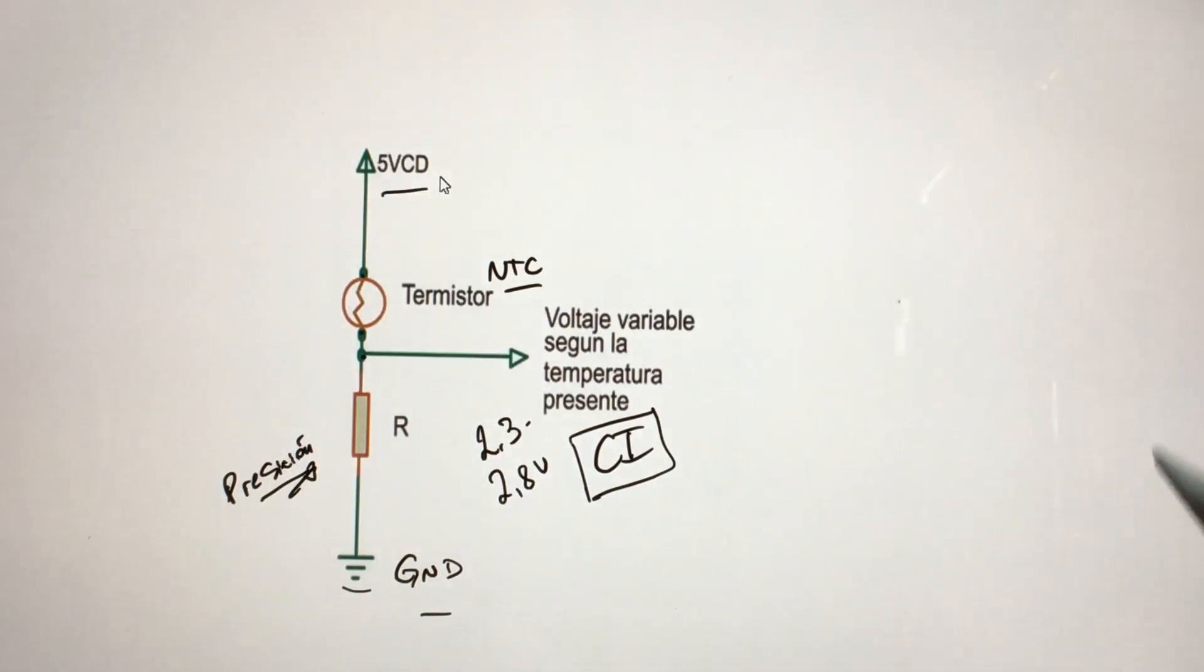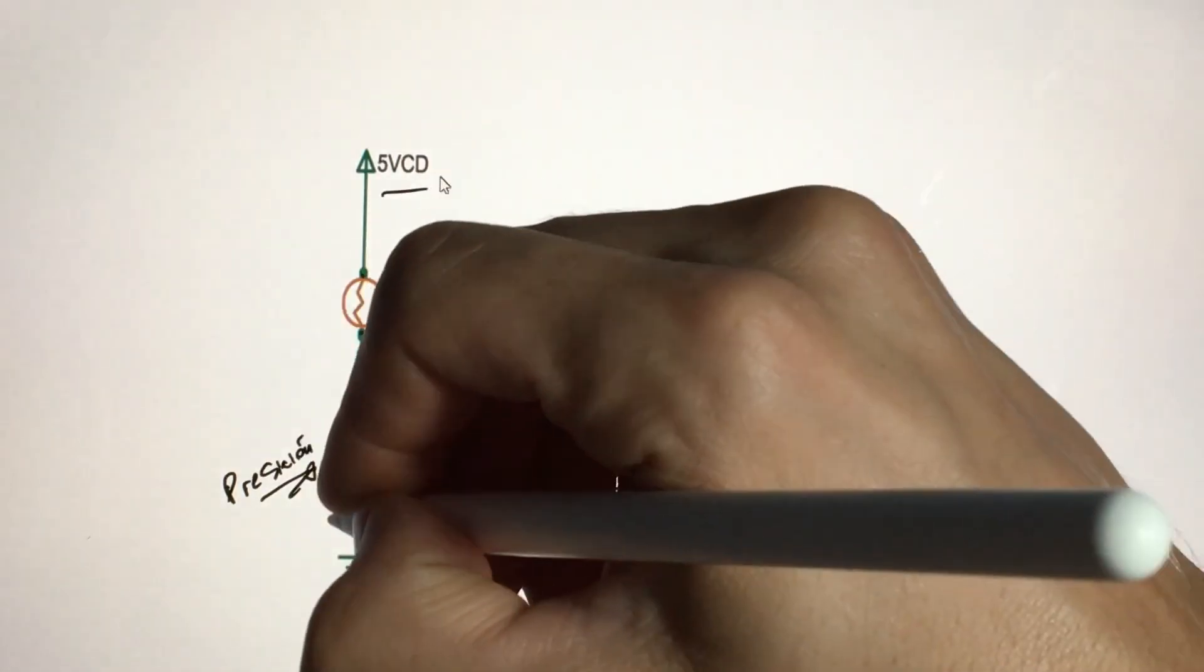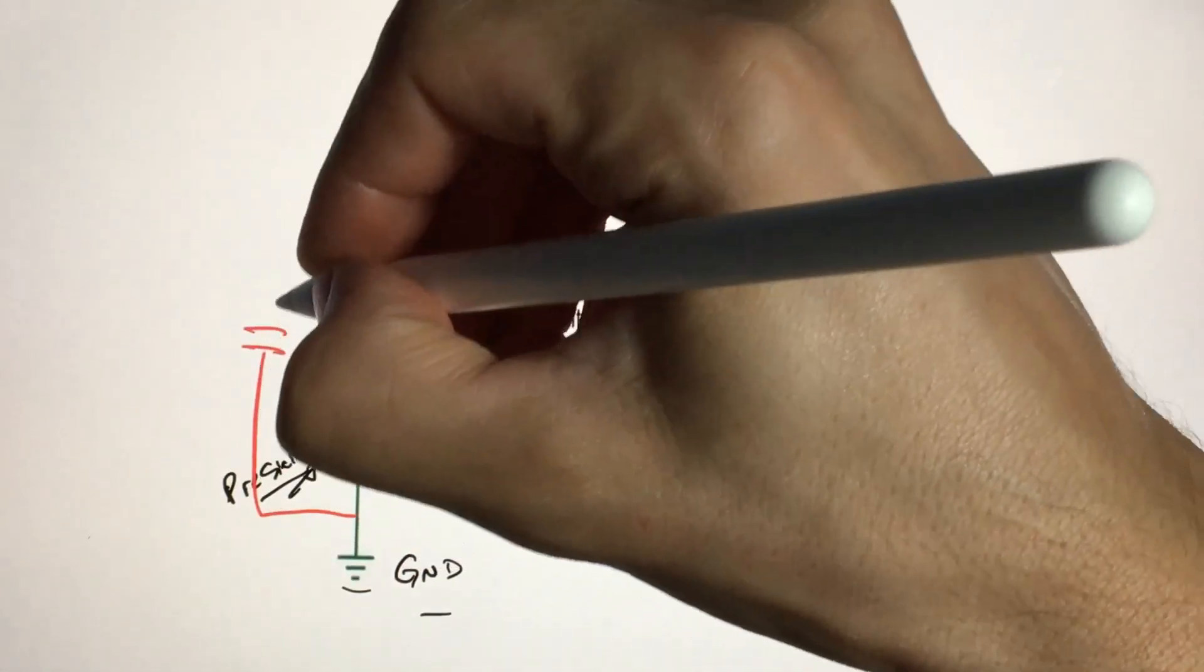Something that is not drawn in this diagram, which you will generally find, is a capacitor that is placed between the negative and the positive.